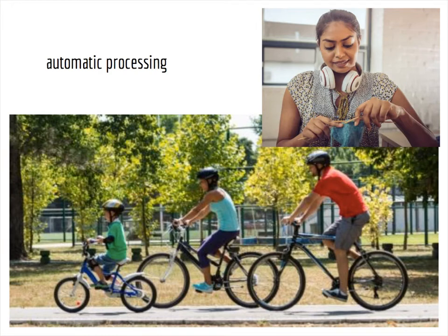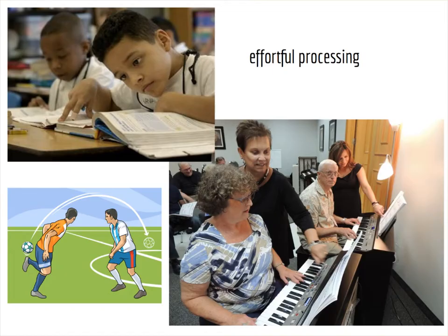There are many things that just seem automatic as we do them — riding a bike, or if you're already a knitter, knitting a new scarf, or driving to work. These are examples of automatic processing: the unconscious processing of well-learned information. We often call behaviors like these muscle memory. Basically, automatic processing is something that doesn't take as much additional thought because you already know how to do it pretty well.